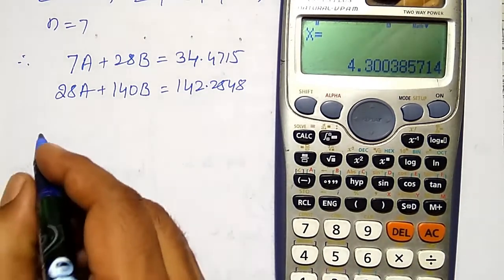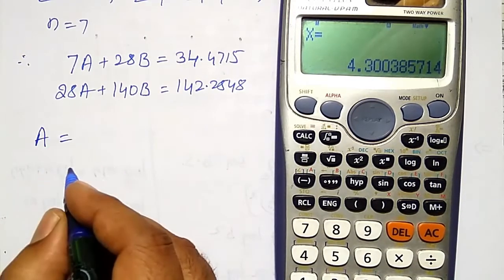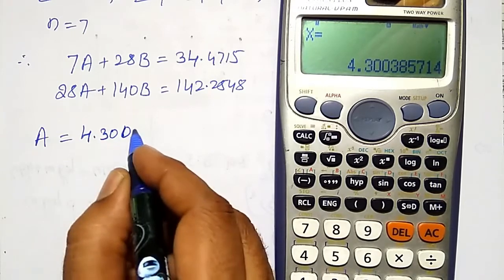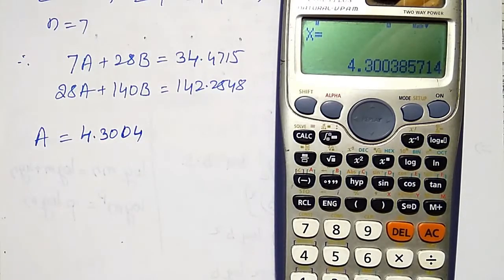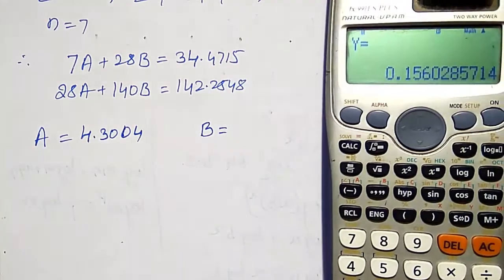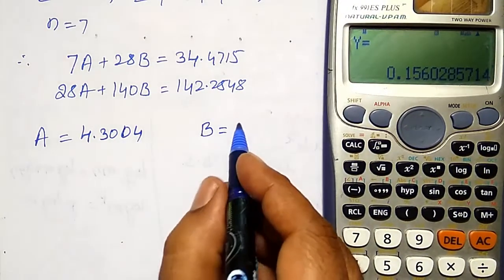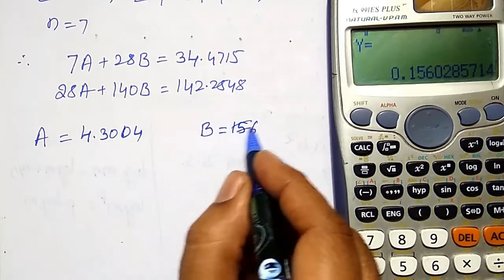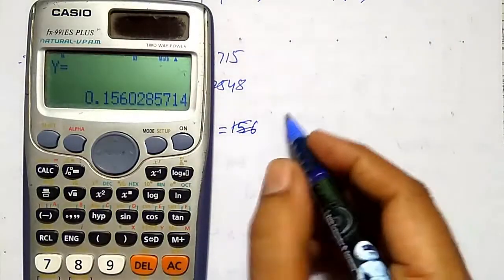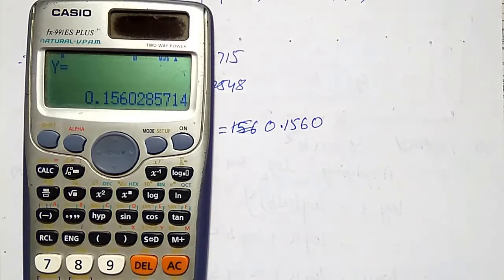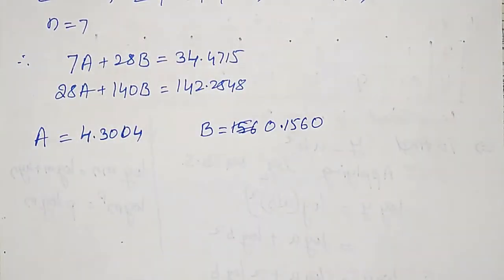Solving, capital A equal to 4.3004. And capital B equal to 0.1560.